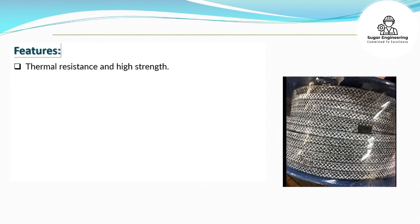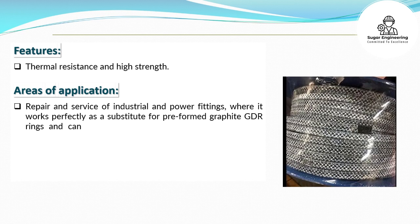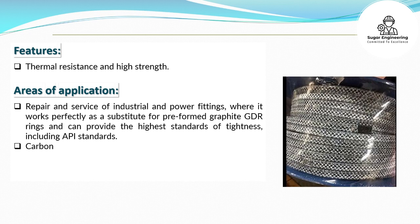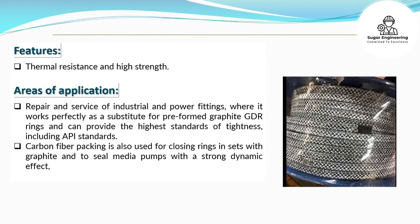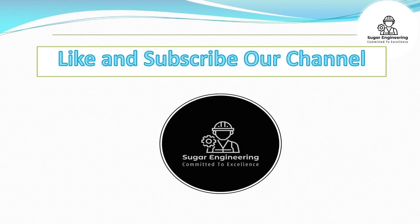Features: thermal resistance and high strength. Areas of application: repair and service of industrial and power fittings, where it works perfectly as a substitute for preformed graphite GDR rings and can provide the highest standards of tightness, including API standards. Carbon fiber packing is also used for closing rings in sets with graphite and to seal media pumps with a strong dynamic effect, where chemical and thermal resistance is additionally required. Like and subscribe our channel for more videos.